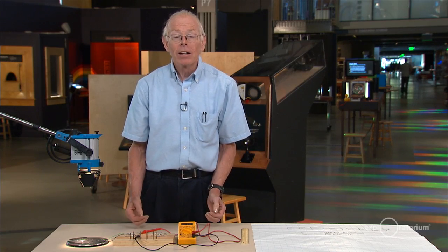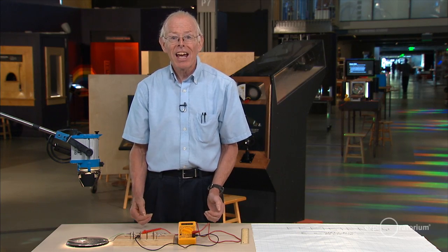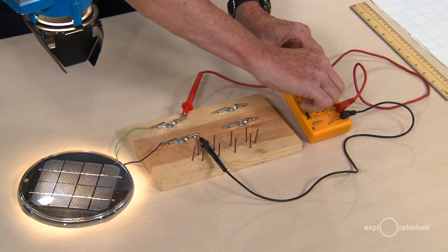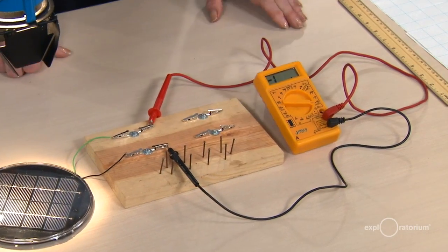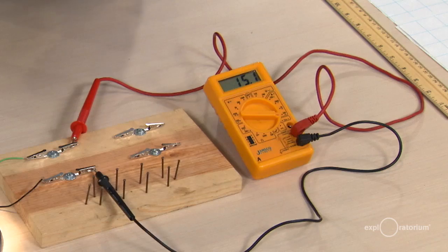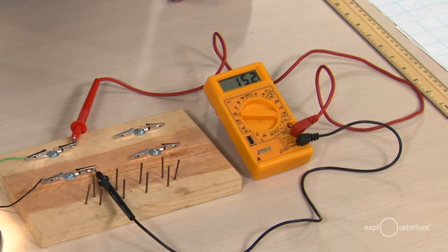But to measure power, I need both voltage and current. So now I'm going to turn this dial so we're measuring electric current. And what I'm finding here is I have about 15 milliamps of electric current.